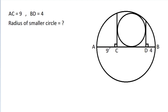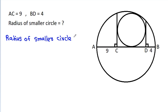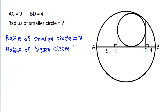In this video, we have been given that AC is 9, BD is 4, and we have to find the radius of a smaller circle. Suppose the radius of the smaller circle is equal to small r and the radius of the bigger circle is equal to capital R. Suppose the centres of the circles are P and Q, and suppose this point is M, this point is E, and this point is F.